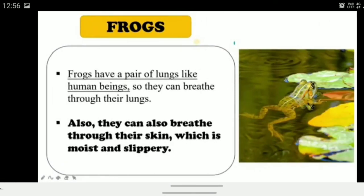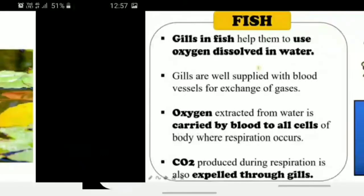Frogs have lungs like human beings. Since frogs are amphibians — living both on land and in water — when they are on land, they breathe through their lungs, and when in water, they breathe through their moist and slippery skin. The process is the same: oxygen is absorbed, mixed into the blood, transported to cells, respiration occurs producing energy, carbon dioxide is produced, returns to the blood, and is expelled through the lungs or skin.